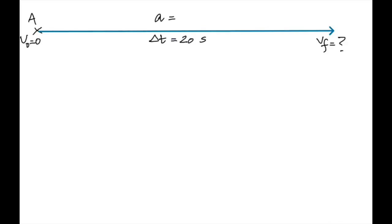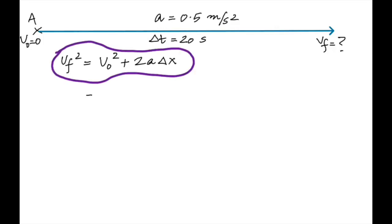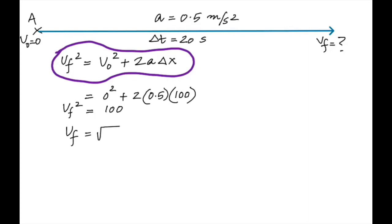Now I'm making you find the final velocity. An object starts from rest and has been traveling for 20 seconds with an acceleration of 0.5 meter per second squared — that's the same situation. Find the final velocity. Using the equation vf² = v₀² + 2aΔy, you get the square root of 100, which is 10 meters per second.